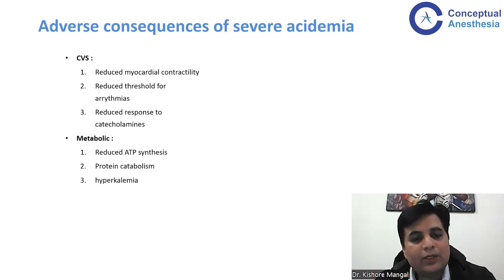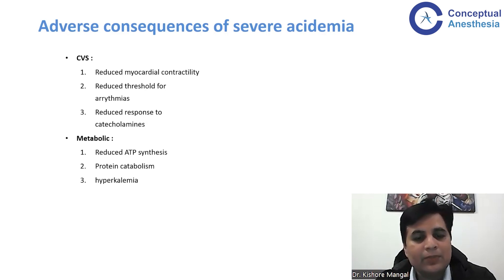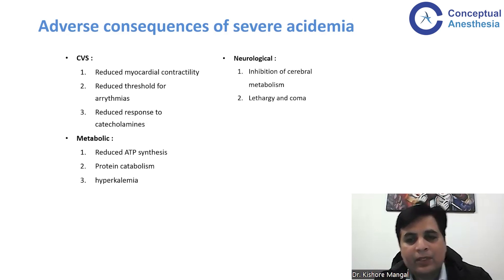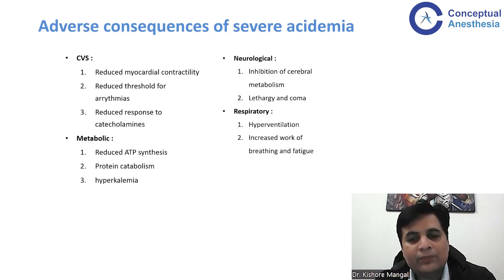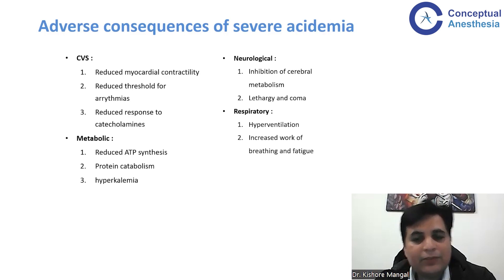Metabolic acidosis can also have huge metabolic changes: it can reduce ATP synthesis, there will be protein catabolism, and it can lead to hyperkalemia and acute renal injury. There can be neurological inhibition of cerebral metabolism, which can lead to lethargy and coma. To compensate for this severe metabolic acidemia, the patient will try to hyperventilate, which will lead to an increase in work of breathing.